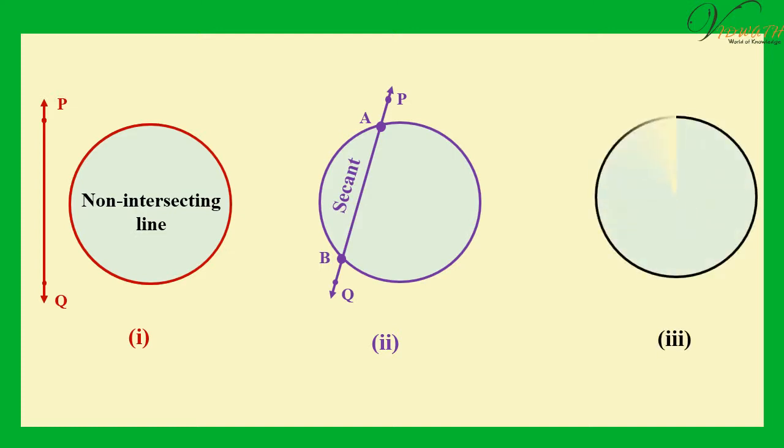Third, there is only one point A which is common to the line PQ and the circle. In this case, the line PQ is called a tangent to the circle.